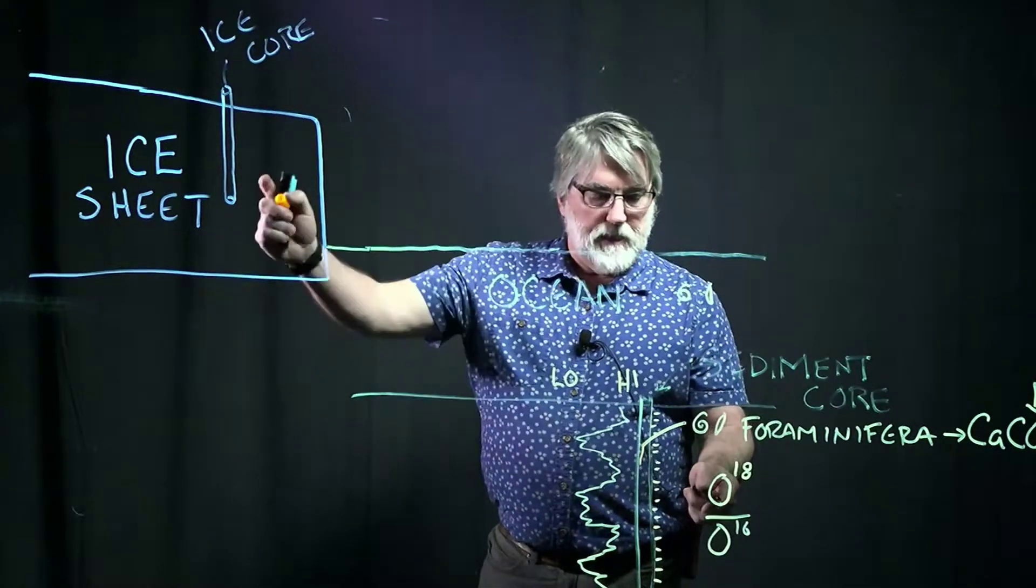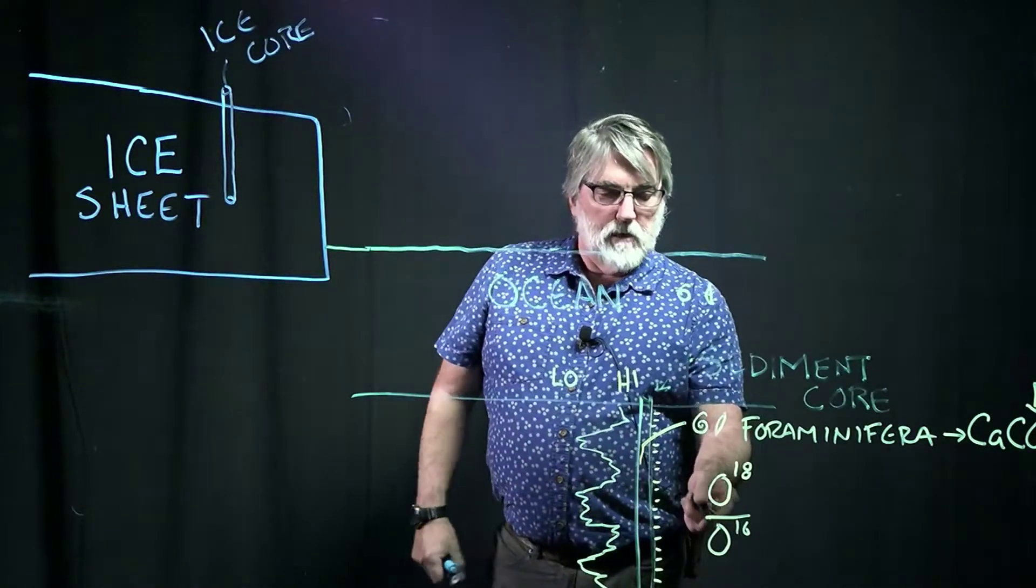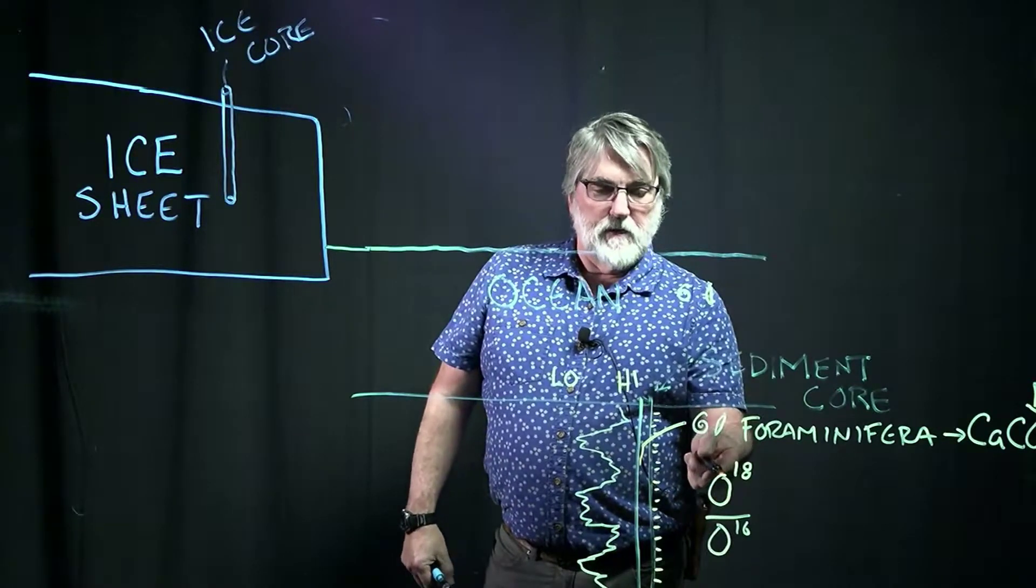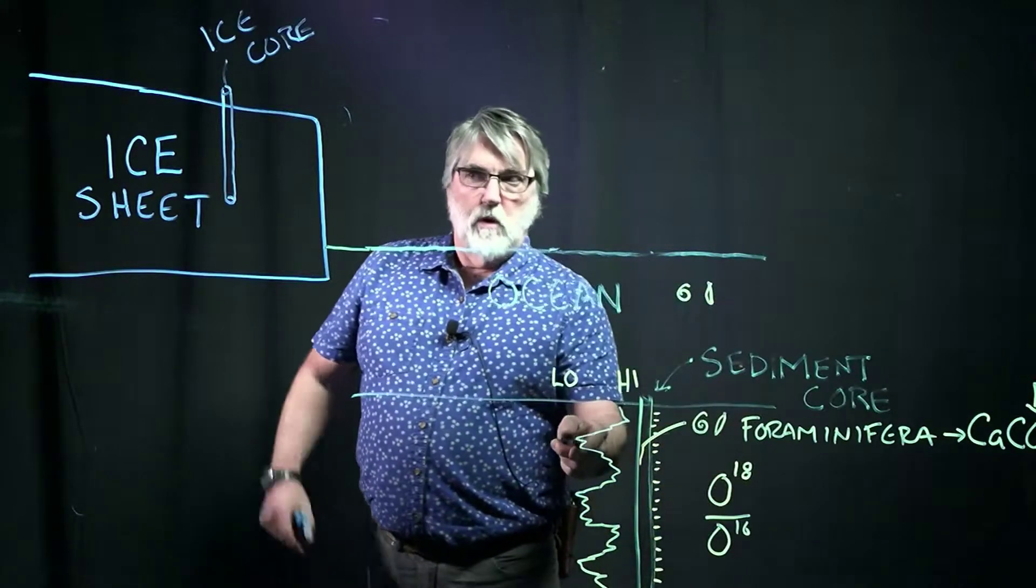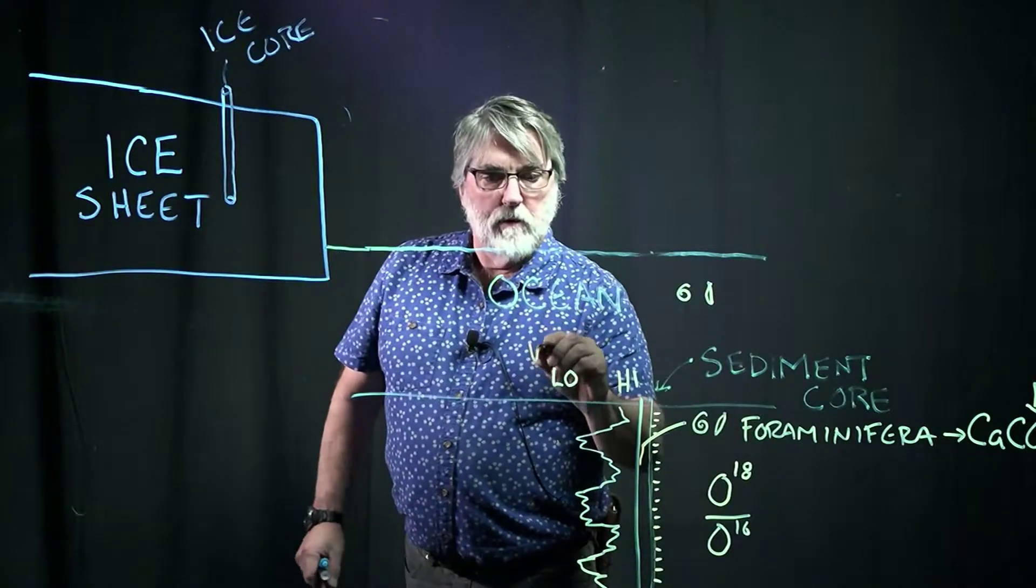That means things are melting. That means we're putting oxygen 16 back into the oceans. So this number is going up relative to this, so this number is getting smaller because it's in the denominator. So when this value is low, things are melting, that's warm.